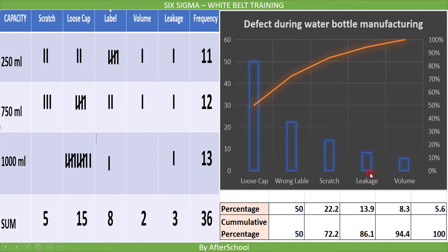This is how the Pareto chart looks. You can see the first bar on the left, which is the highest bar, and it is related to a loose cap. It has 18 problems out of 36 total problems, which means 50% of the problems were loose cap problems, contributing to 50% of all issues. Each defect is plotted here, and we now have the data in descending order.